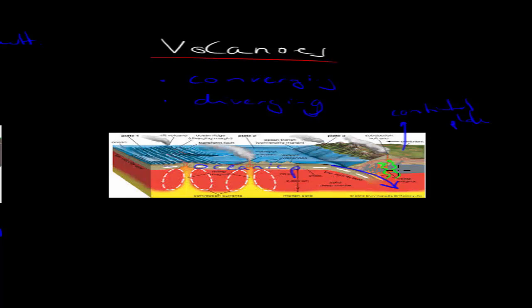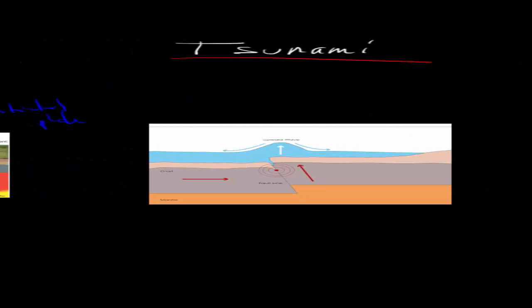The other one is tsunamis. Tsunamis usually occur at also converging and diverging boundaries, and they're connected to earthquakes. So earthquakes can occur at these as well.